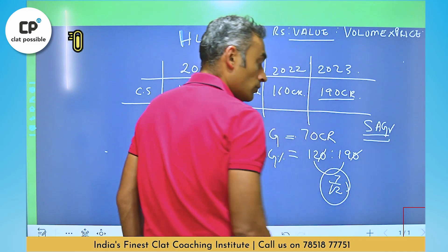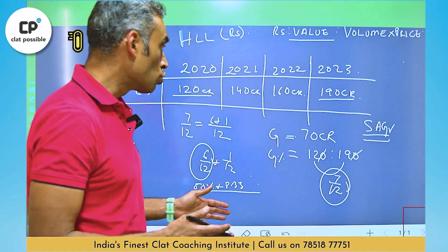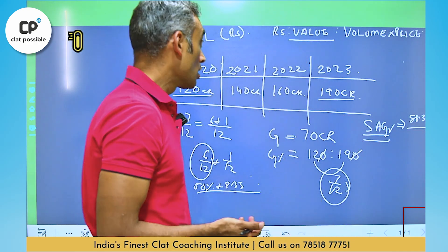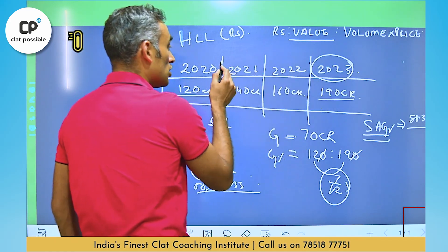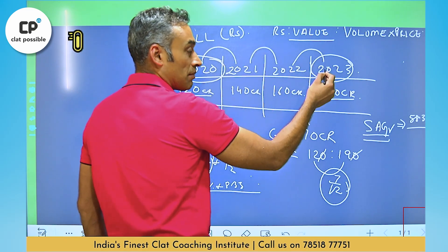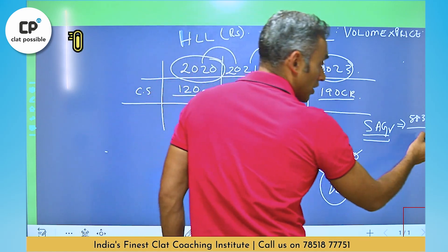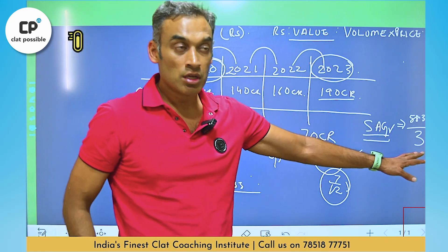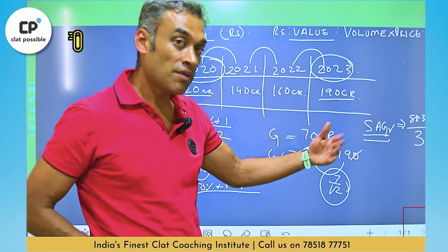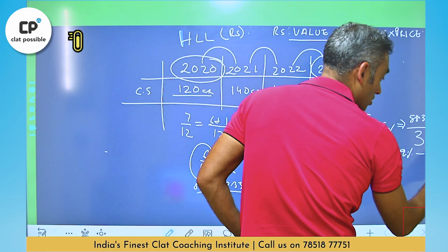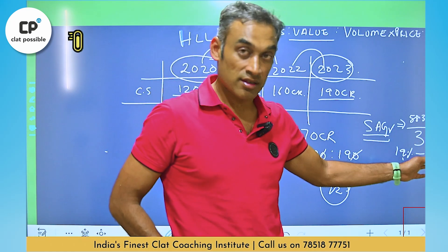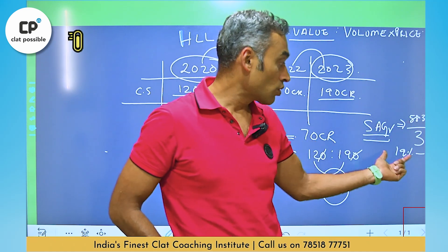The next concept is Simple Annual Growth Rate — the average growth per year. We take the overall growth percentage, 58.33%, and divide by the number of time periods. The time period is the final year minus the initial year: 2023 minus 2020 equals 3. So we calculate 58.33 divided by 3. Since 57 by 3 is 19 and 60 by 3 is 20, the answer falls between 19% and 20%. Hunt for an option in that range and you have your answer.